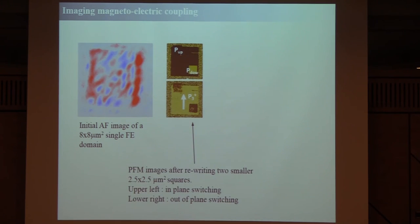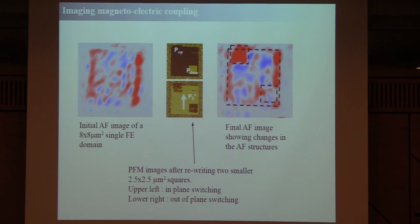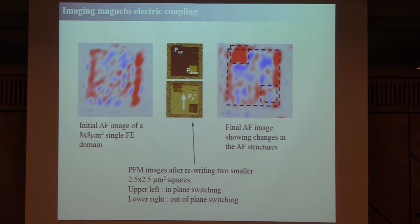Once we have these images we can play around with them. We took an 8×8 micron single ferroelectric domain and electrically switched the polarization in two corners. We then re-imaged magnetically and found that the antiferromagnetic domain pattern had changed completely. This demonstrates that magnetoelectric writing works: changing the polarization changes the anisotropy of the magnetism and therefore changes the patterns. In these ~2.5×2.5 micron switched regions, we have more or less a single antiferromagnetic domain.